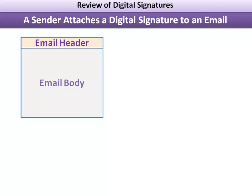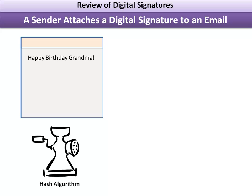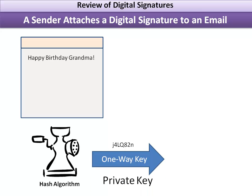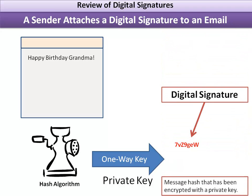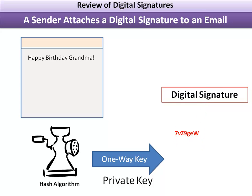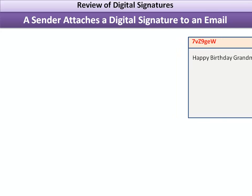Now we're going to merge these two concepts of hash and public key encryption to create a digital signature. We have an email with a body and header, and our message 'happy birthday grandma.' We run it through our hash algorithm to produce a message hash, and then encrypt it with the private key that only we have. The result — a message hash encrypted with a private key — is called a digital signature. We discreetly hide this digital signature in the message header and email it off.